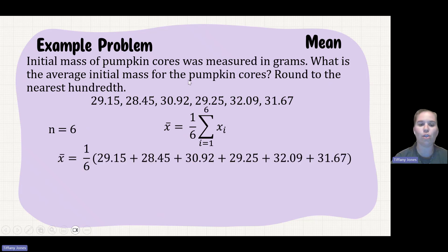Put each of those values into the equation: 29.15 plus 28.45 plus 30.92 plus 29.25, 32.09 plus 31.67. That gives me 181.53, and divide that by 6. That gives me 30.255. It tells me I need to round to the nearest hundredth, so that's going to give me 30.26.